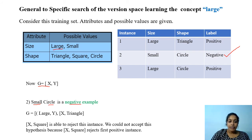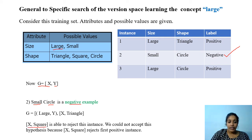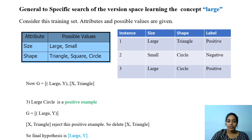Now, 'circle' is getting matched with y. The specializations y can take are triangle, square, and circle. We don't give circle because that would cause our hypothesis to accept the negative training instance. So we get {x, triangle}. We omit {x, square} because that hypothesis failed to accept the already-seen positive example. So we don't add {x, square}.